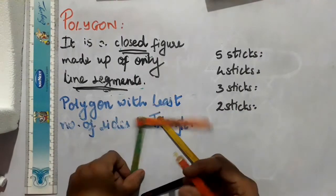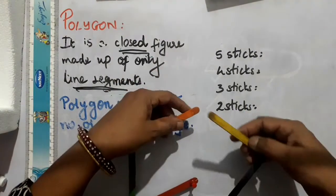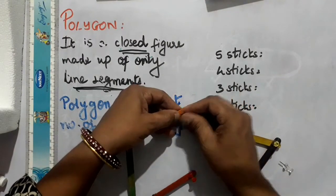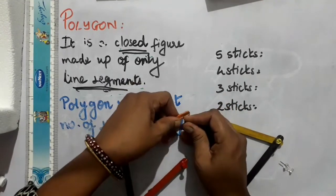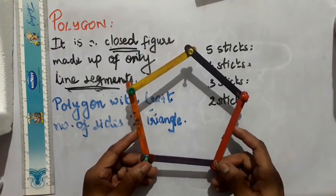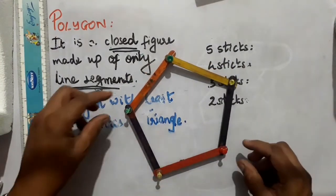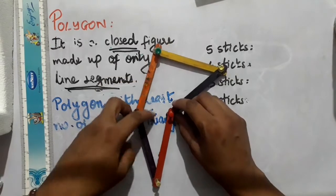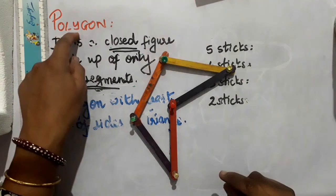I am trying to make a polygon using 5 sticks. Let me try it out — here, 3 and 2 more. I need to join them. I tried to make a closed figure using 5 sticks. You can also try it out on your own. You can form it like this, you can make it the way you want. The thing is that you have to try to make a closed figure using 5 sticks.